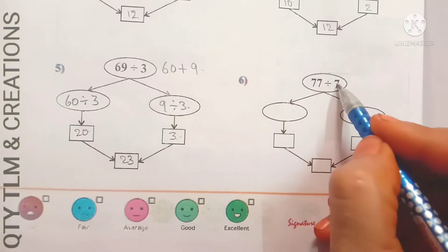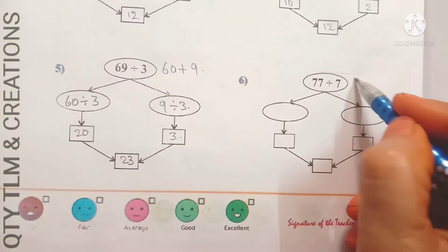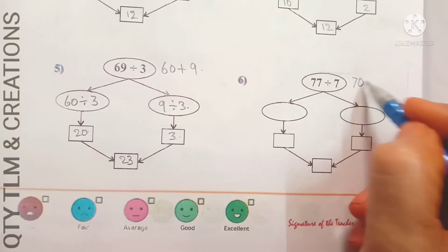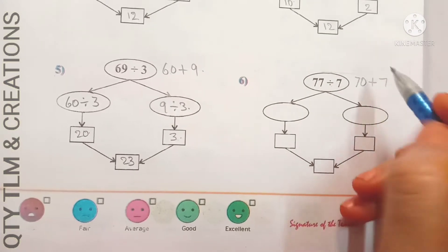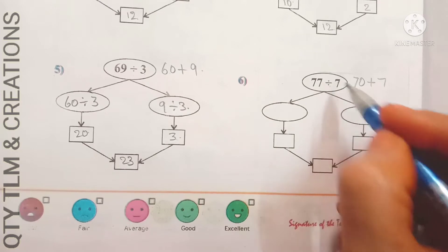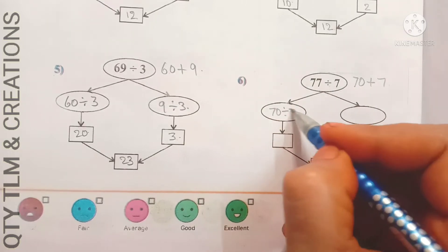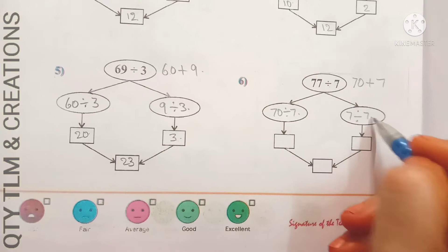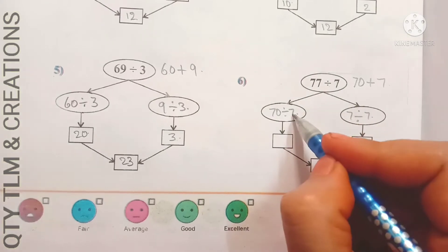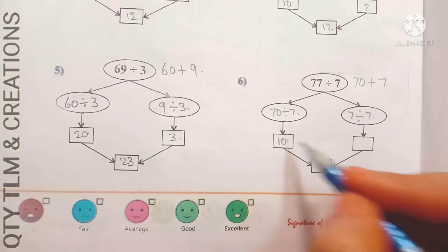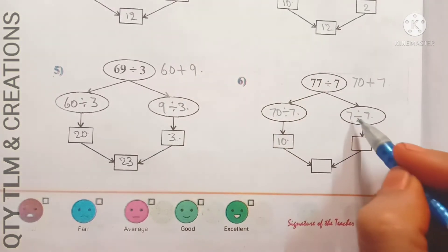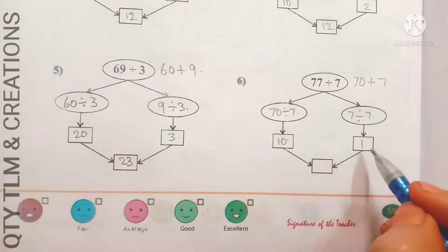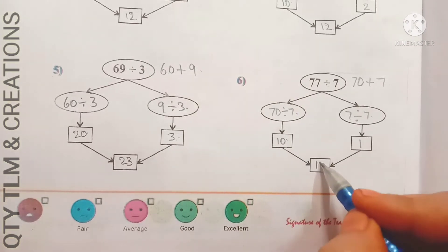Next: 77 divided by 7. The expanded form of 77 equals 70 plus 7. So 70 divided by 7 and 7 divided by 7. 7 divides 70 for 10 times, and 7 divides 7 for 1 time. We add 10 plus 1 and we get 11.